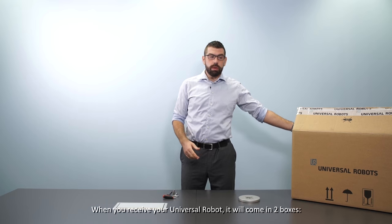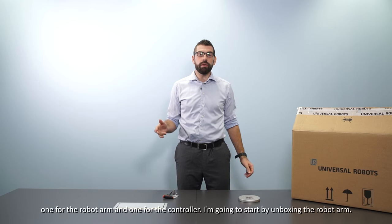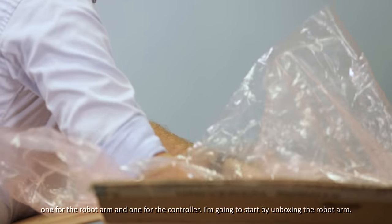So when you receive your Universal Robot, it will come in two boxes, one for the robot arm and one for the controller. I'm going to start by unboxing the robot arm.